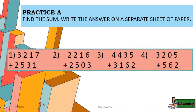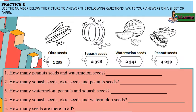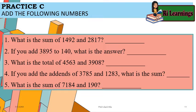Practice A: Find the sum. Write the answer on a separate sheet of paper. Practice B: Use the numbers below the picture to answer the following questions. Write your answers on a sheet of paper. Practice C: Add the following numbers.